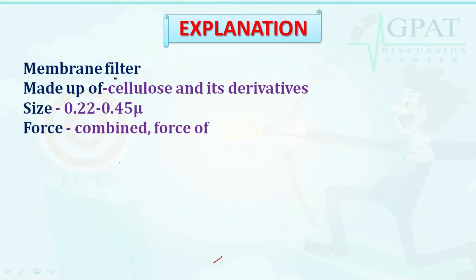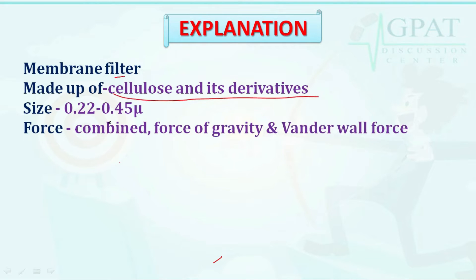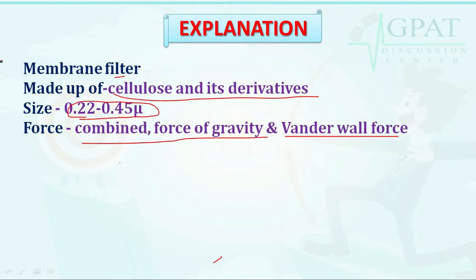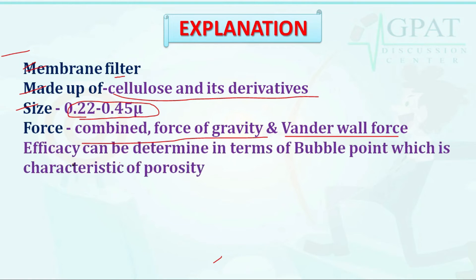The membrane filter is made up of cellulose and its derivatives, and its size is 0.22 to 0.45 microns. The efficacy of a membrane filter can be determined in terms of bubble point, which is a characteristic of porosity. Note the material and size of membrane filters as these details may appear in questions.